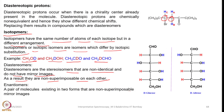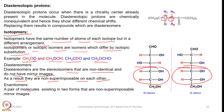For example, you can see that one portion is a non-superimposable mirror image, but the other portion is not. Those two are called diastereomers. A pair of molecules existing in two forms that are non-superimposable mirror images of each other are called enantiomers.